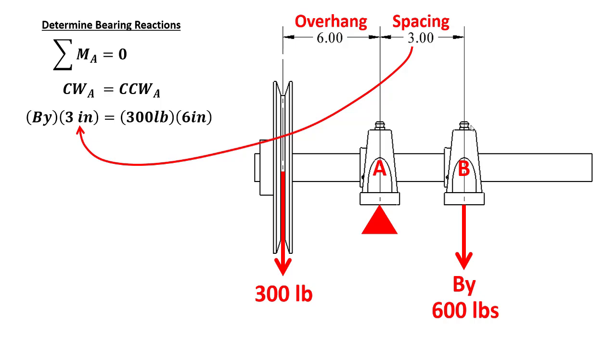To find the load on bearing A, we balance vertical forces, which simply means that the upward forces have to balance all the downward forces. The reaction force on bearing A is the only upward force, so that means it has to be the combined total of both the 300 pound and the 600 pound loads, equaling 900 pounds. Hopefully it makes logical sense to you that the radial load on bearing A is higher than bearing B, since it has to support both the load on the pulley as well as the load on bearing B.